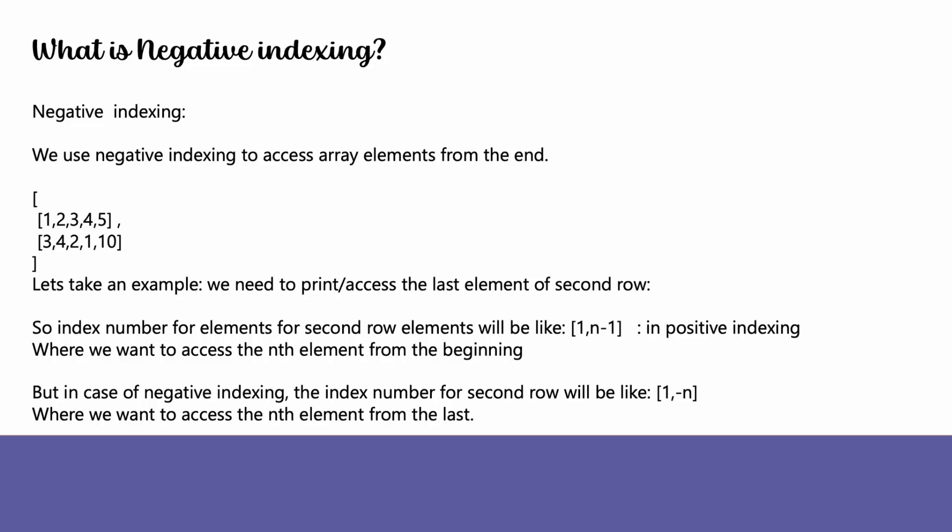Note the difference: in positive indexing we are accessing the nth element from the beginning and giving the value 1 comma n minus 1, but when we want to access the nth element from the last using negative indexing, we give the values 1 comma minus n.